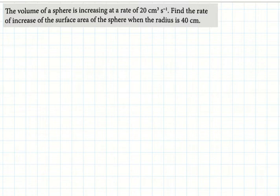To begin with, let's collect the data first. If you look at the data, dV/dt, the rate of increase of volume, has been given as 20 cm³ per second. We need to find dS/dt when radius is 40.